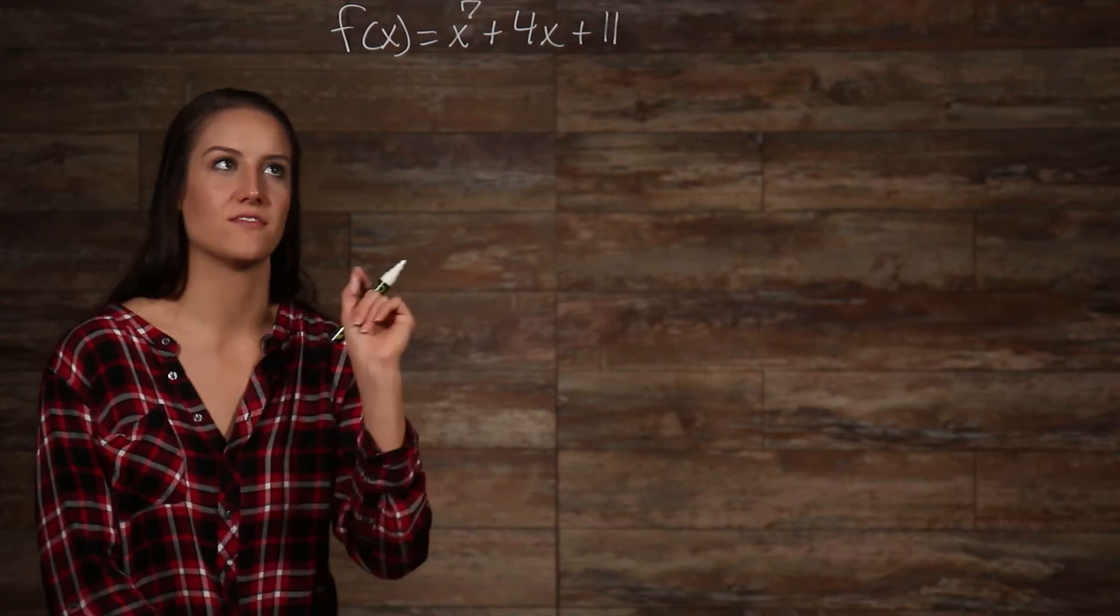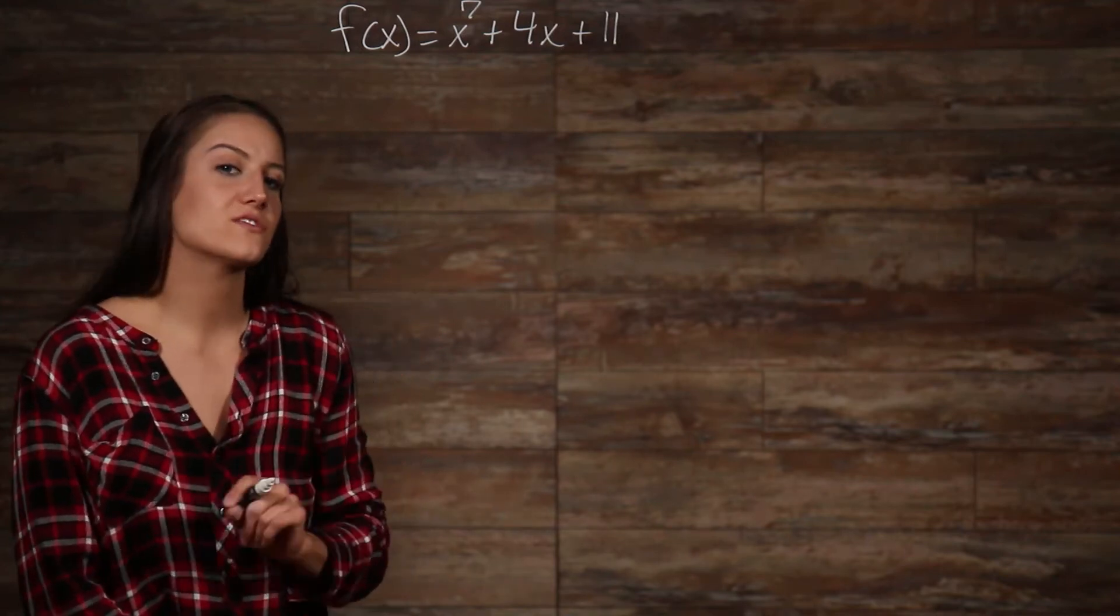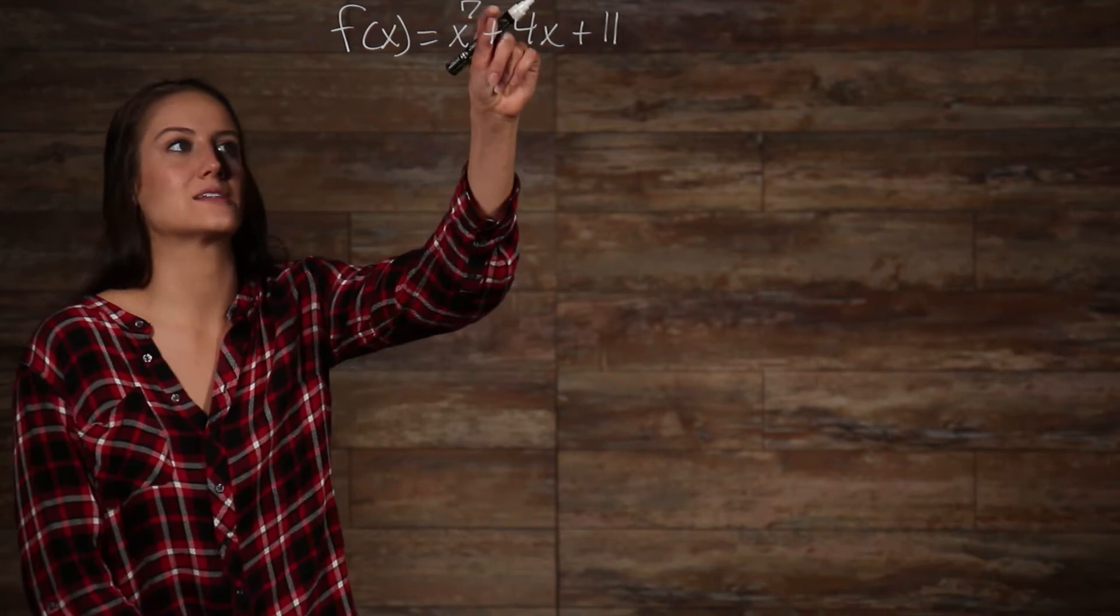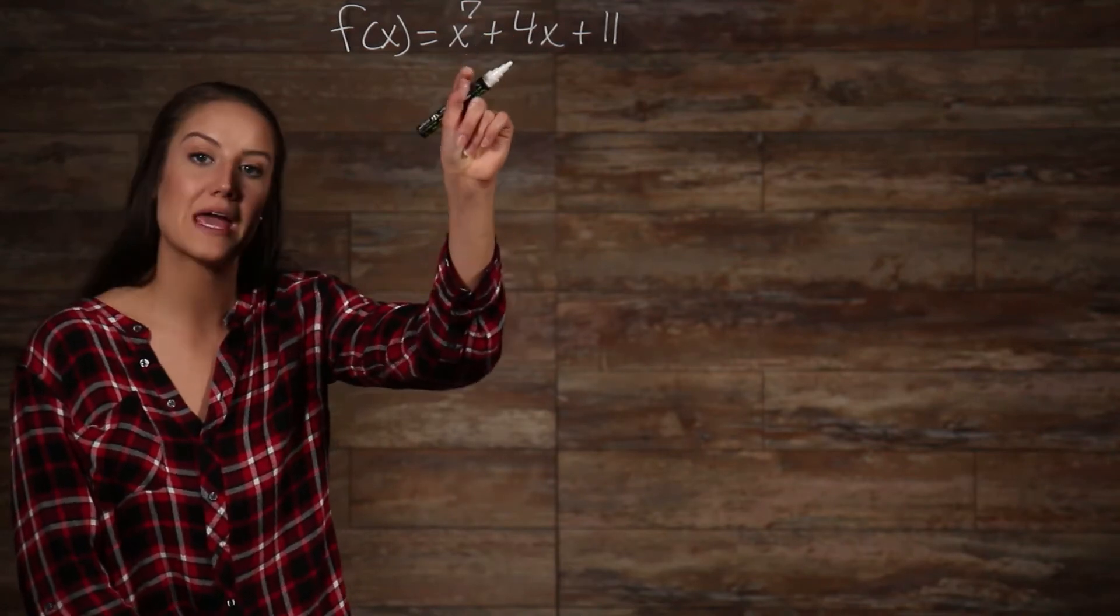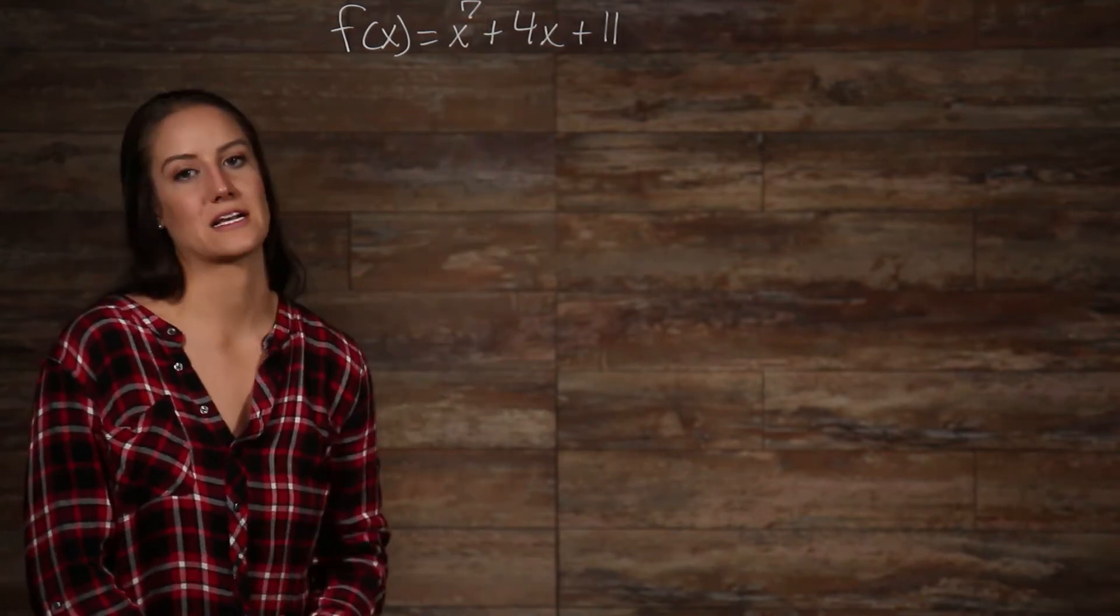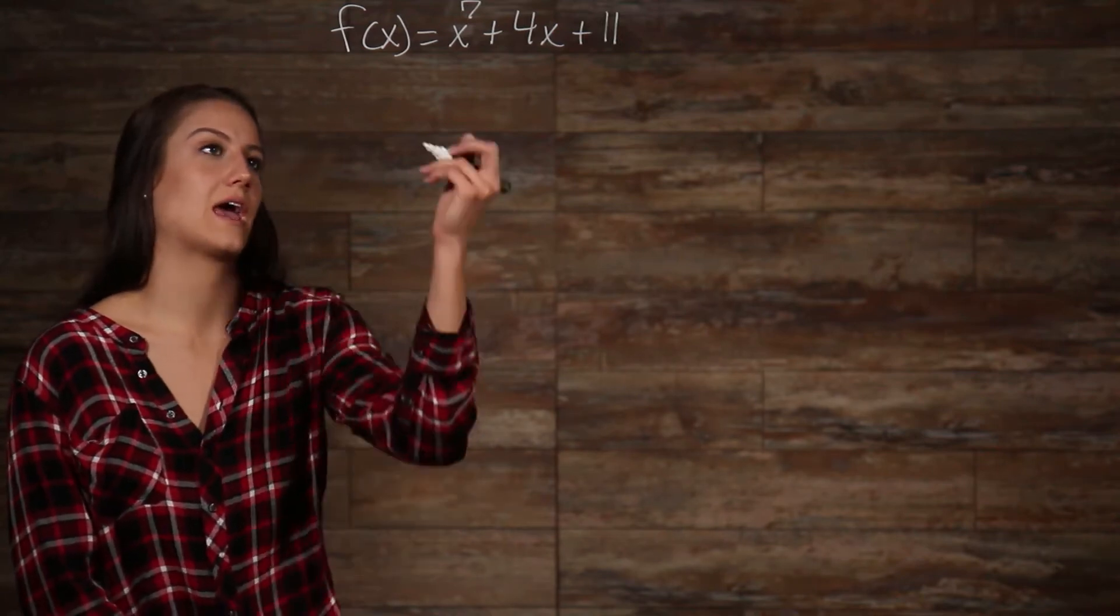First, let's take the derivative of this function. Recall that when differentiating powers of x, we bring this exponent down and multiply times the base, then we subtract one from our exponent. When we do that to this function, then we get the derivative.